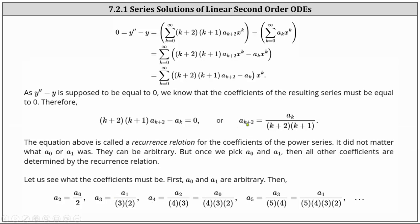For the rest of the terms, we'll rewrite them in terms of a sub zero and a sub one. To find a sub four, notice k is two, which begins as a sub two divided by the product of four and three. But a sub two equals a sub zero divided by two, so performing this substitution we have a sub four equals a sub zero divided by the product of four, three, and two. For a sub five, k is three, giving us a sub five equals a sub three divided by the product of five and four. Since a sub three equals a sub one divided by the product of three and two, we have a sub five equals a sub one divided by the product of five, four, three, and two.